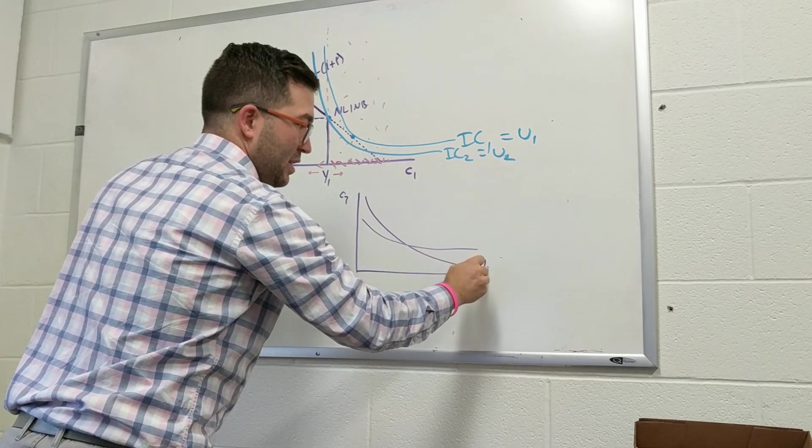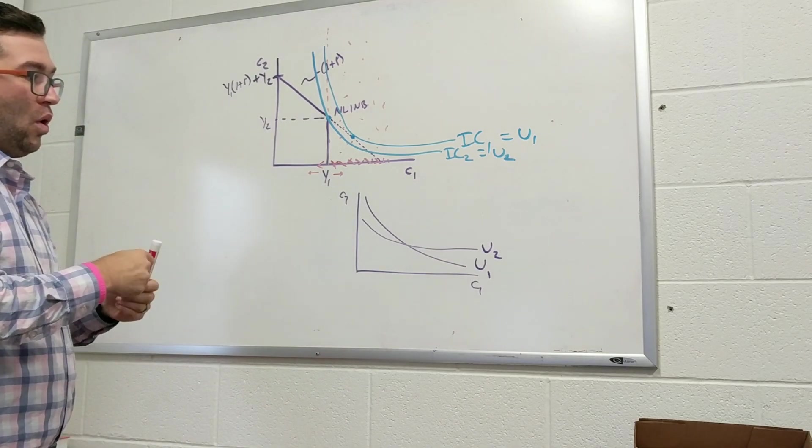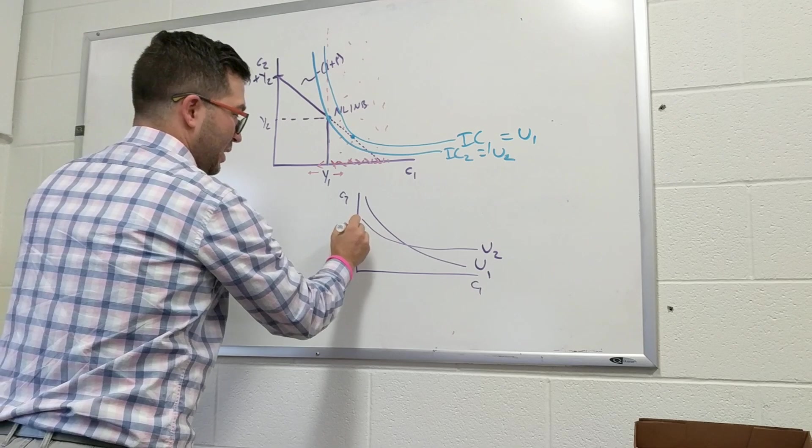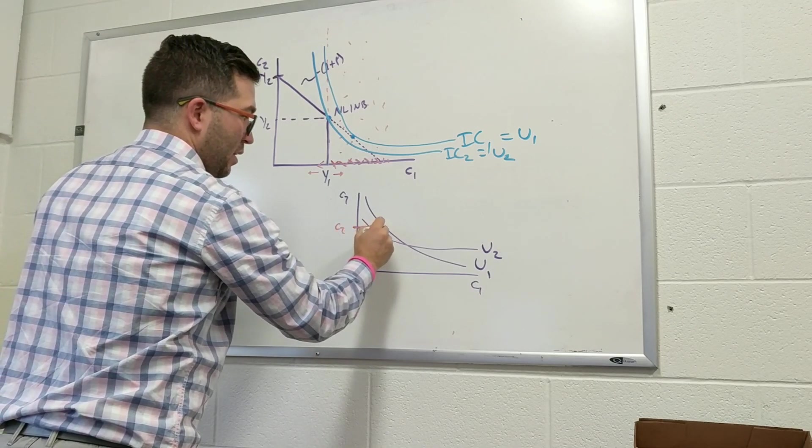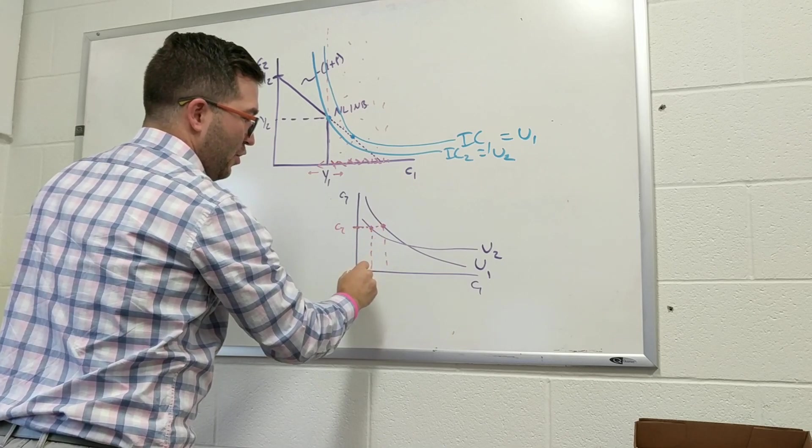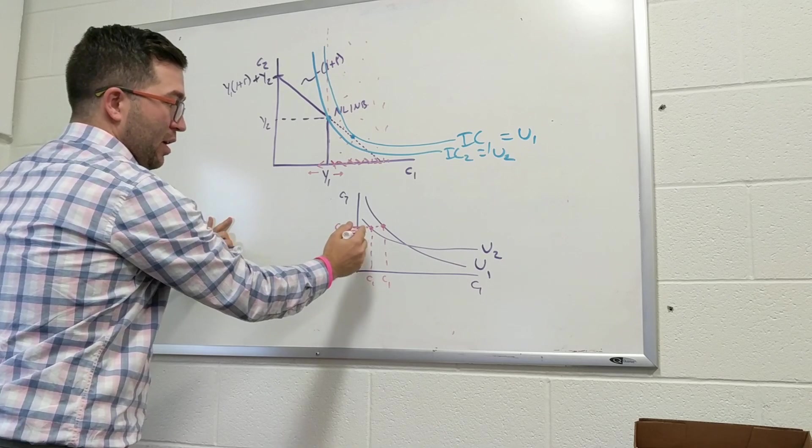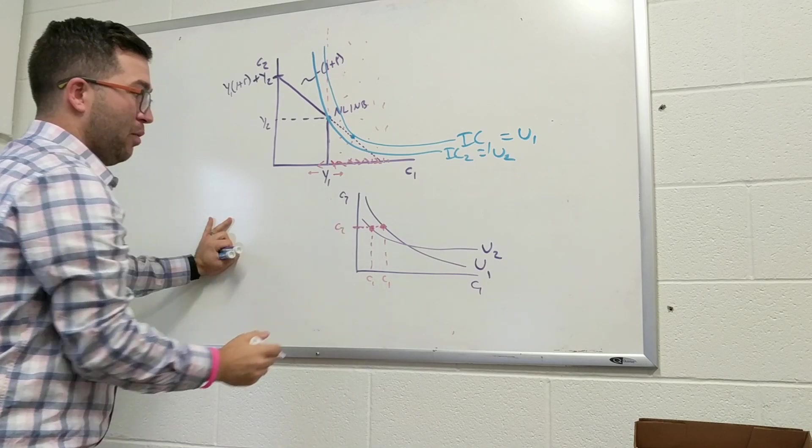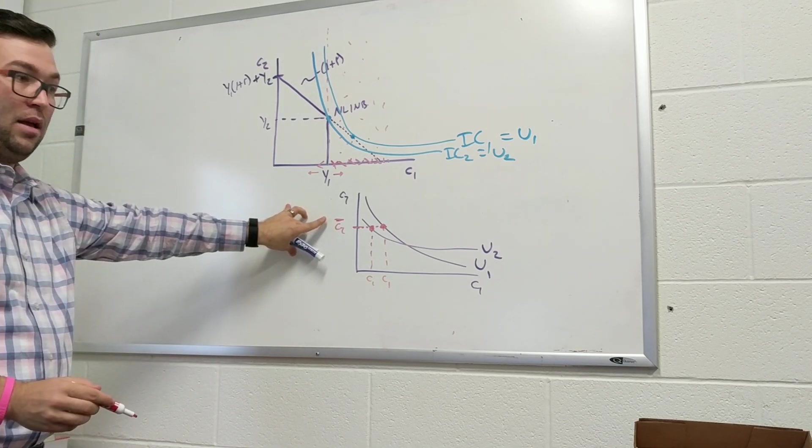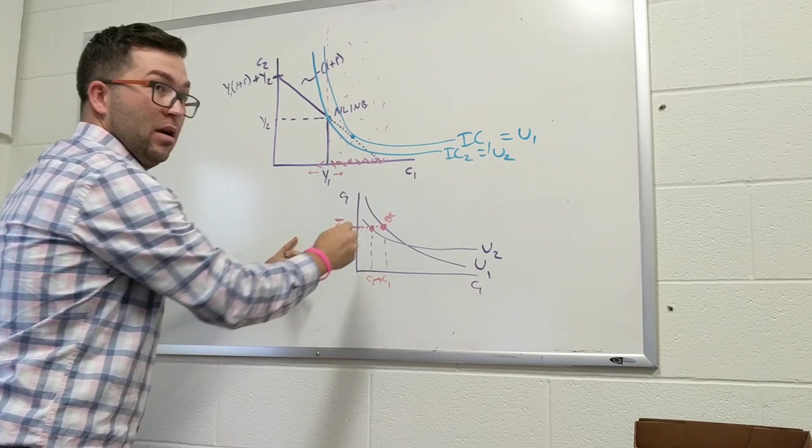So this is, let's just say this is utility one, this is utility two. The reason why this can't happen is let's look at a couple of points. Let's say this is a C2 point here. And so you can see there's two different levels of C1. What's better here, this point or this point? I have the same level of second period consumption. But I have more C1 on this one, so that means this point has to be better.